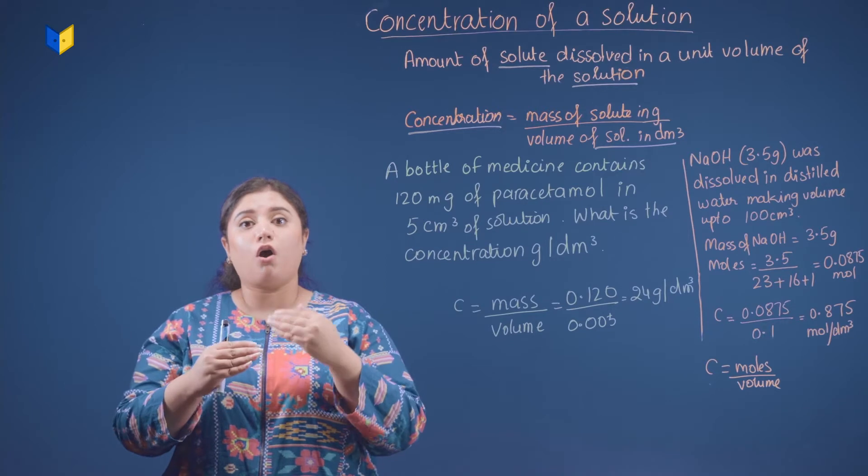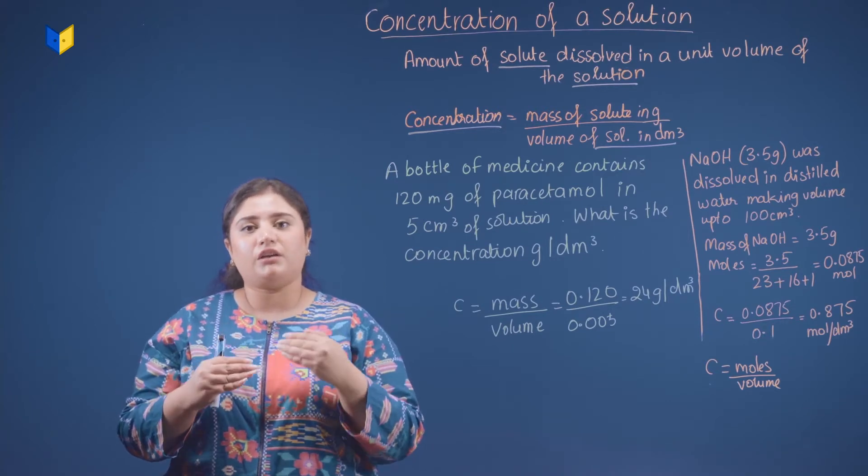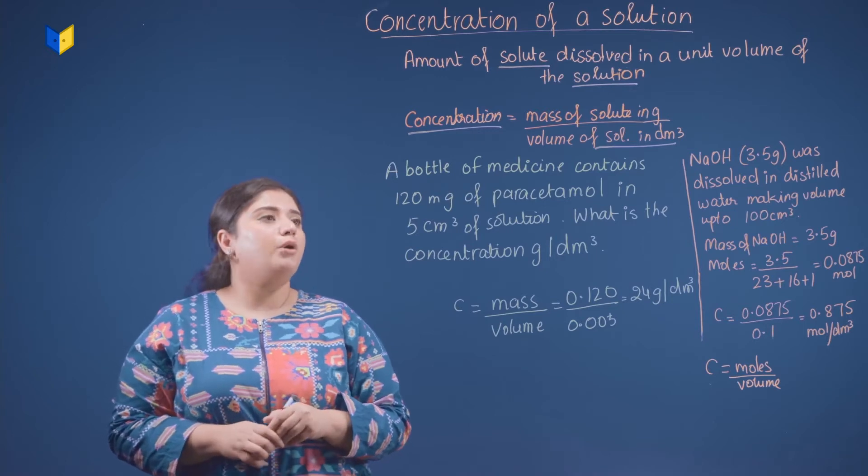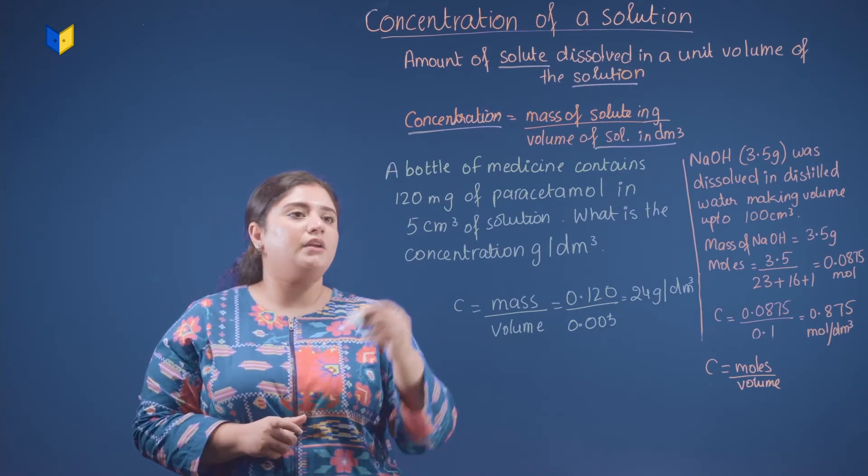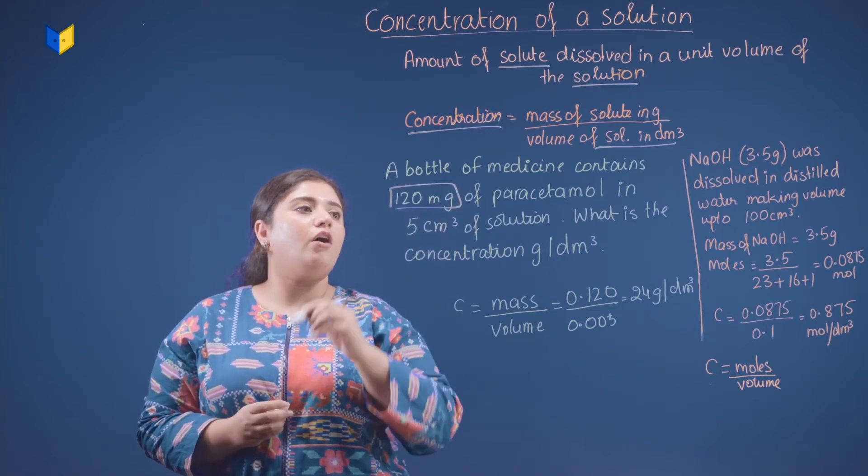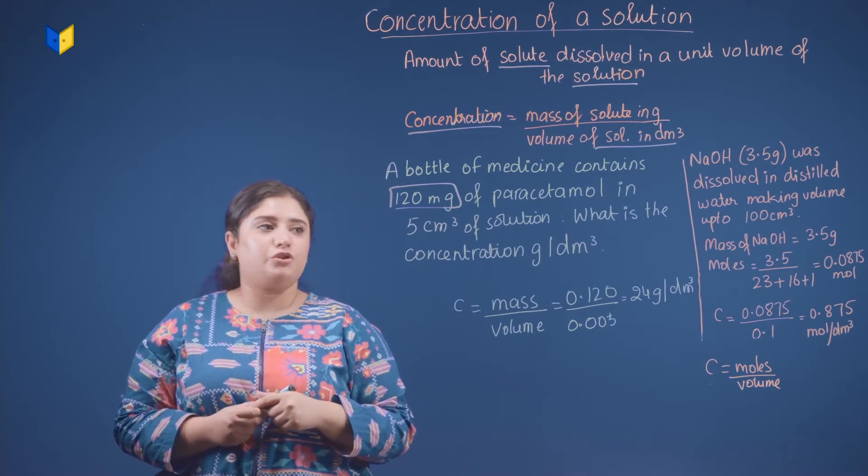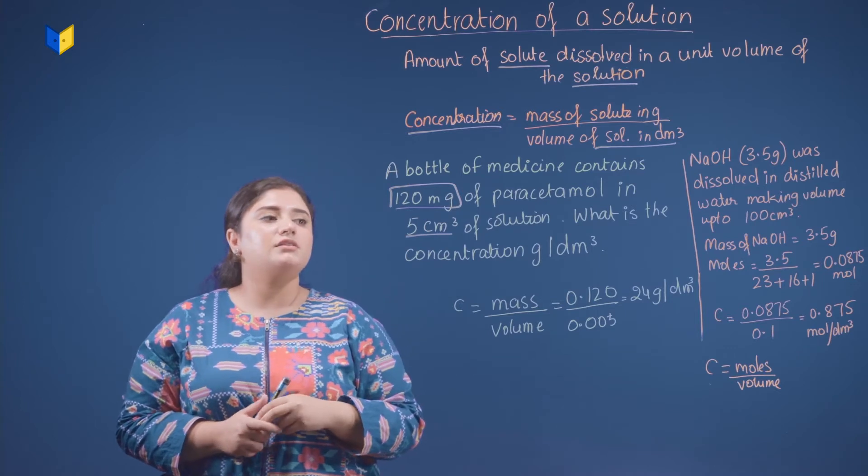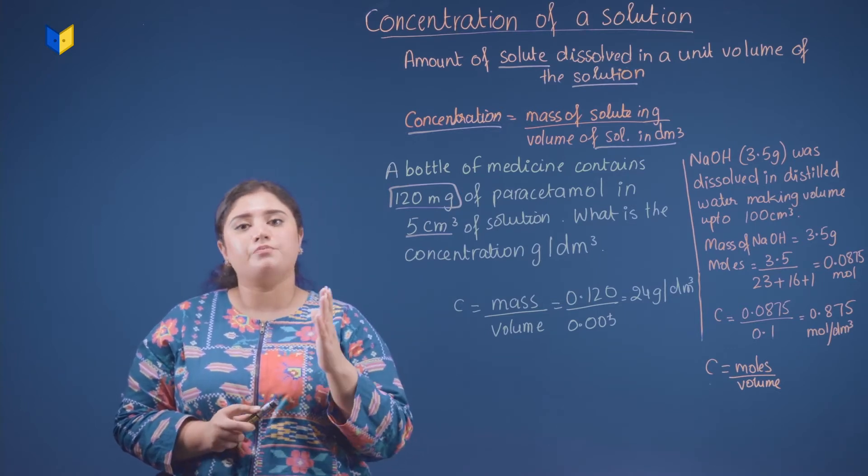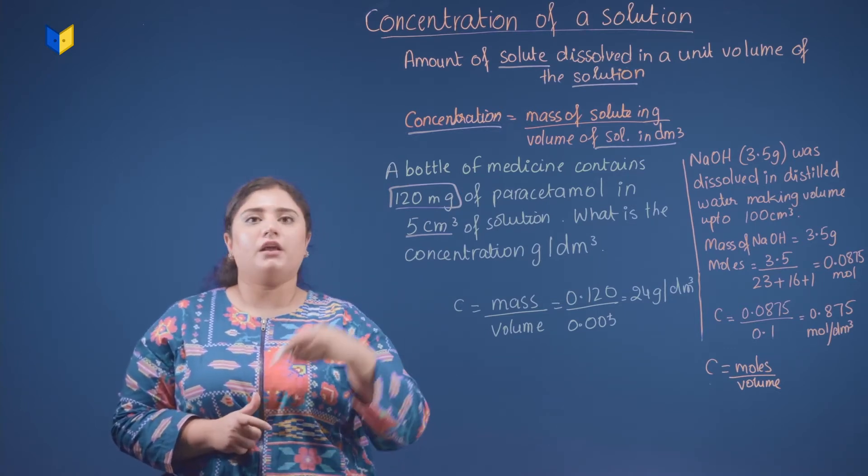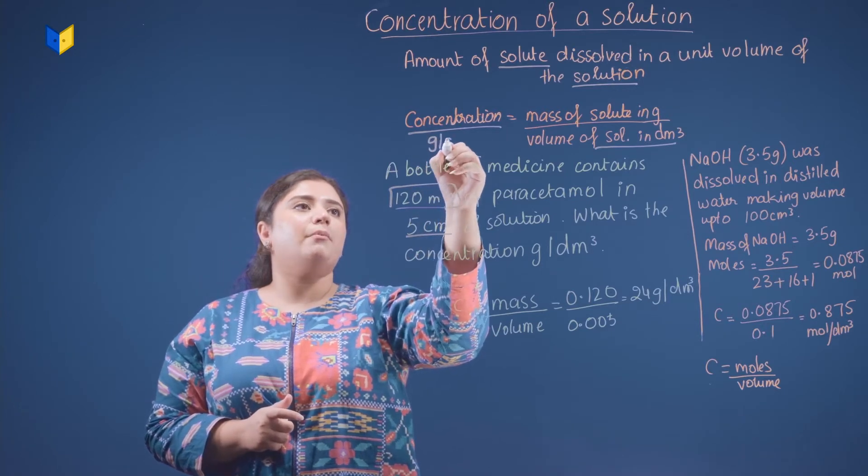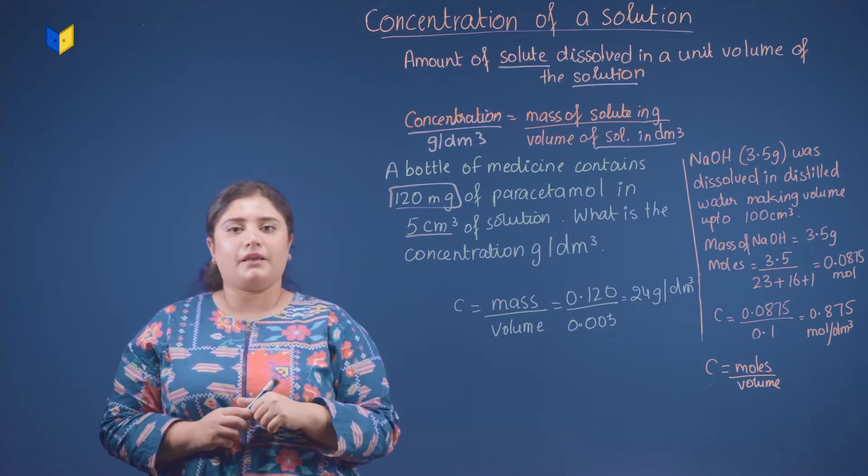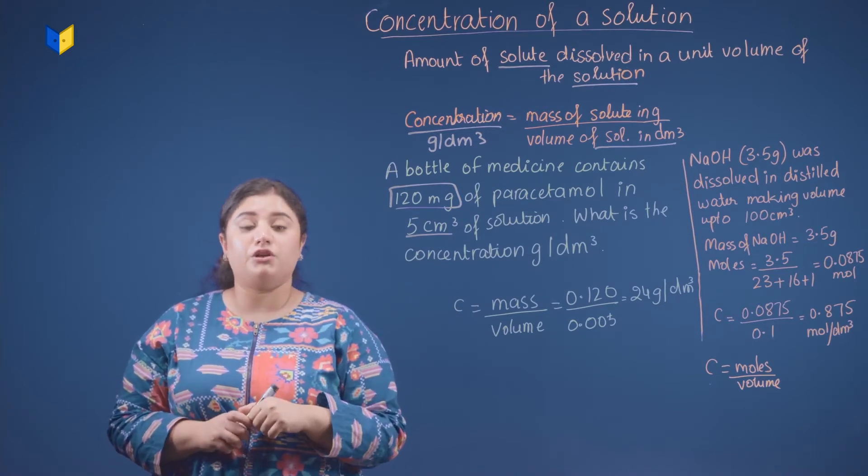Now we are going to see a problem in which we are going to solve how to calculate concentration from the given units. First one: a bottle of medicine contains 120 mg of paracetamol in 5 cm cube of solution. This is the volume, this is the mass. What is the concentration in gram per dm cube? So we can also say that the unit of concentration is gram per dm cube.